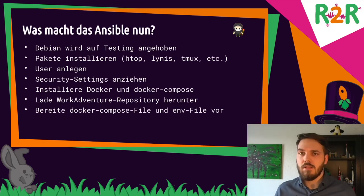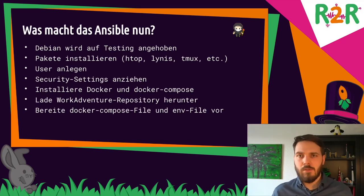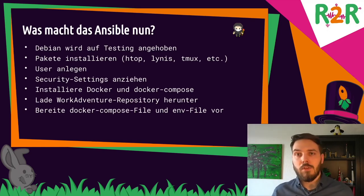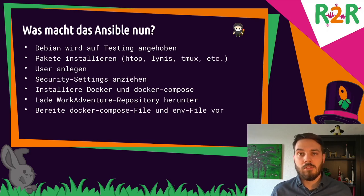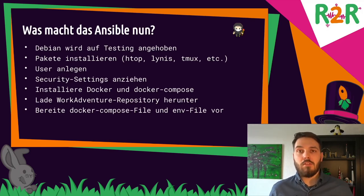What does Ansible do in this case? Debian 10 is updated and the whole system is brought up to date. There are packages that get installed, a user is set up that you can use to connect to the host. There are a lot of security settings that are configured — firewall rules, for example, and SSH daemon configs that prevent the root user from connecting via SSH to the host. These are all measures to make sure everything works fine and you don't have to worry. After that, Docker and Docker Compose are installed.